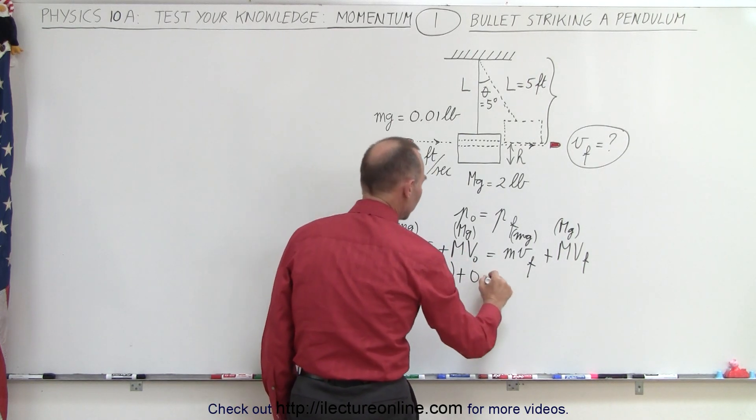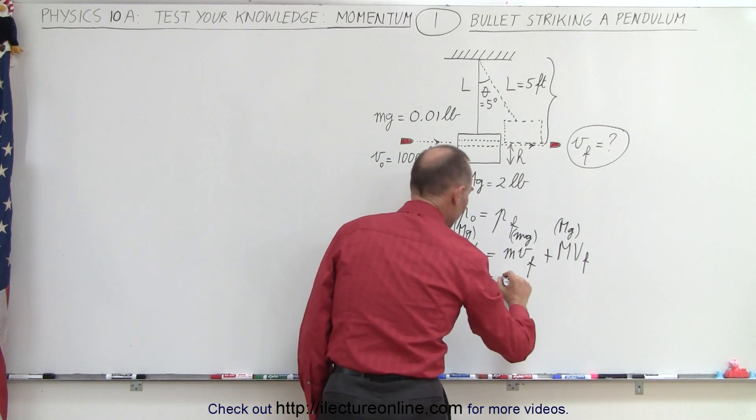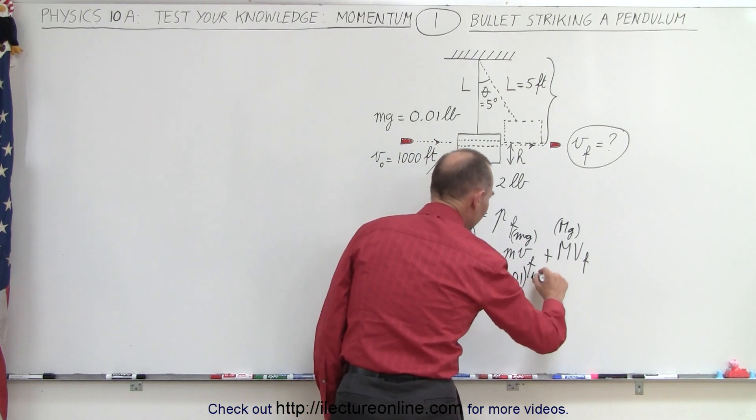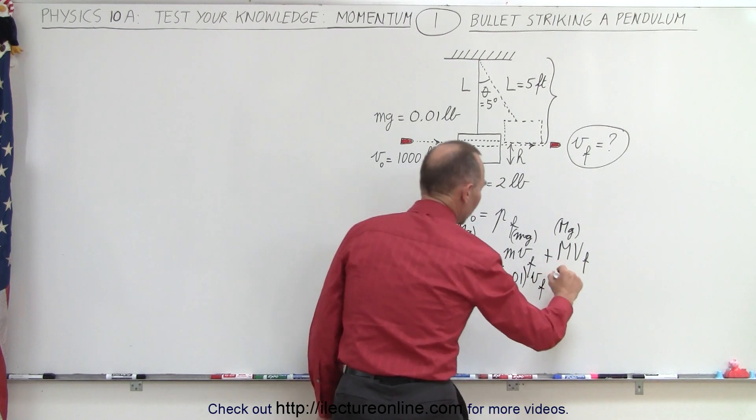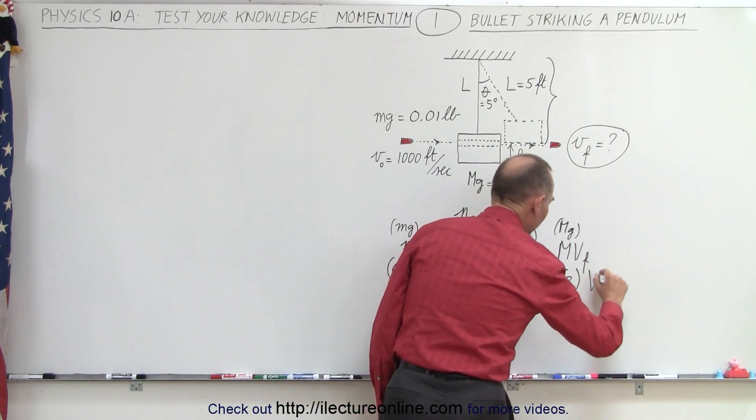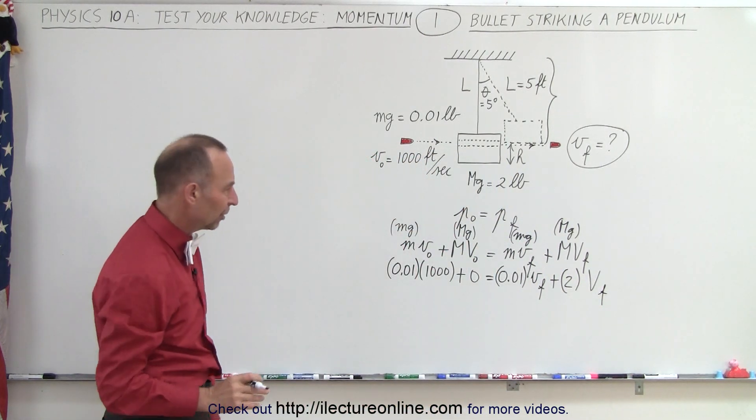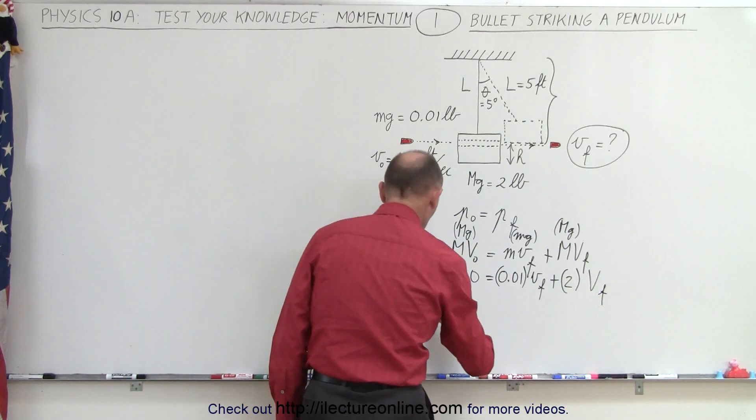equals 0.01 times v final plus 2 times big V final. Those are the two unknowns which we don't know.